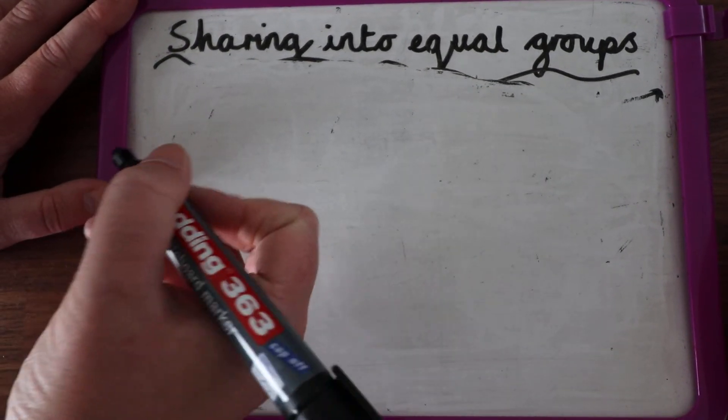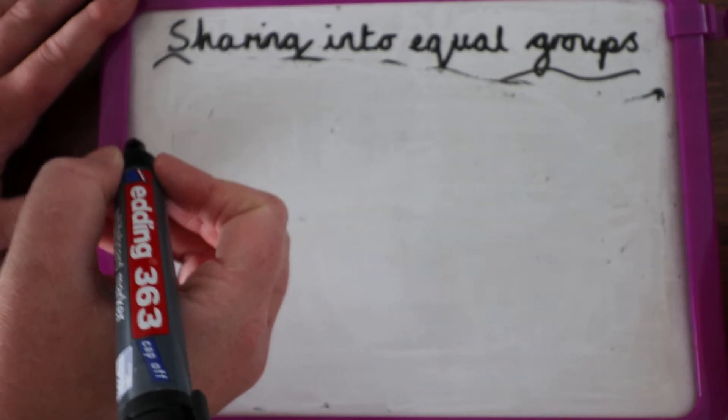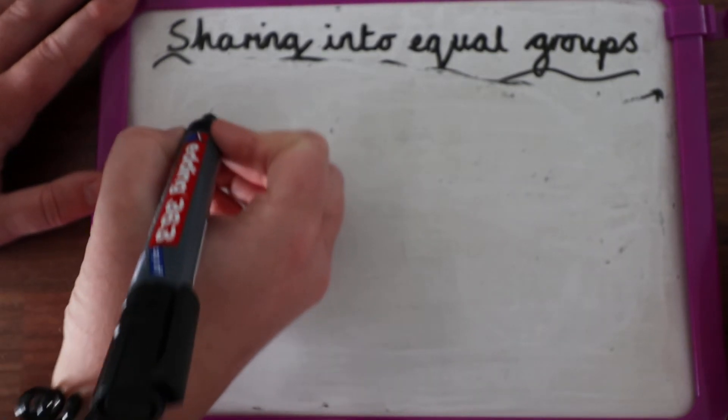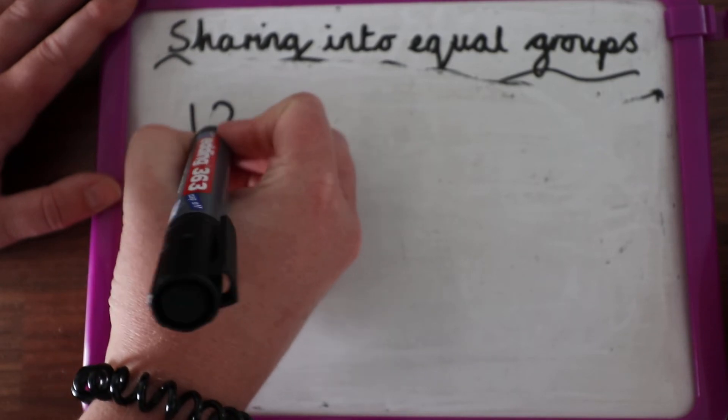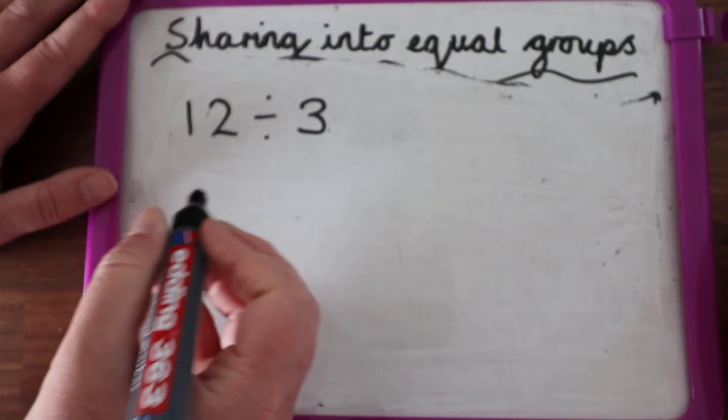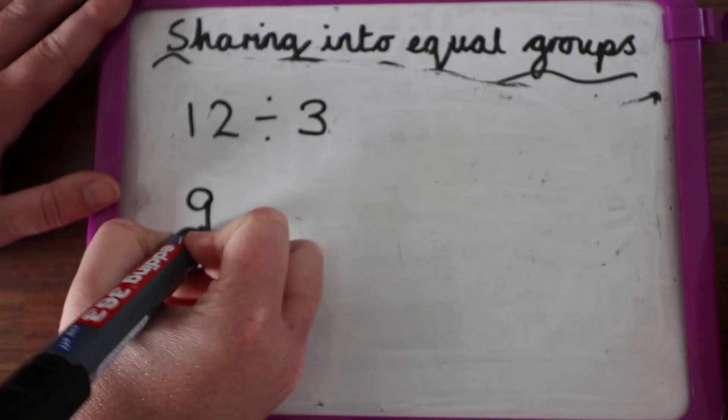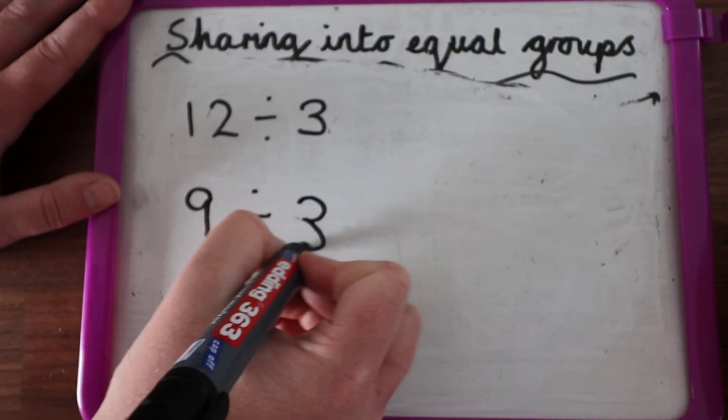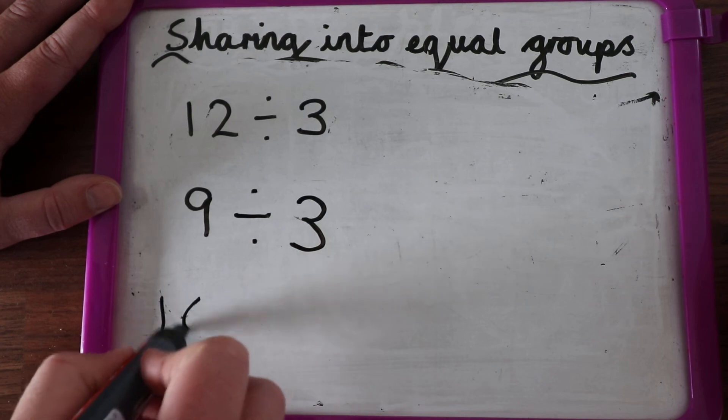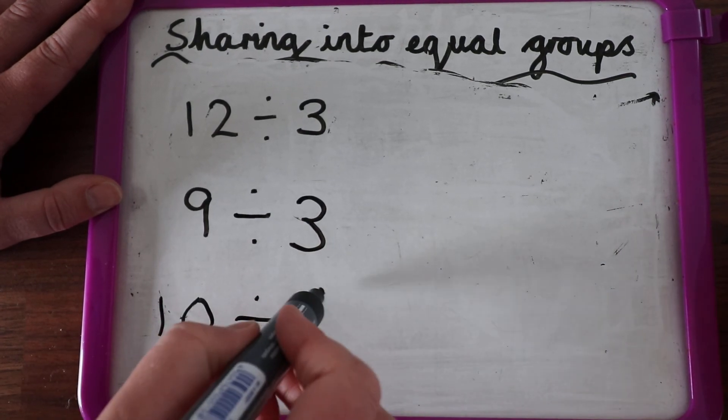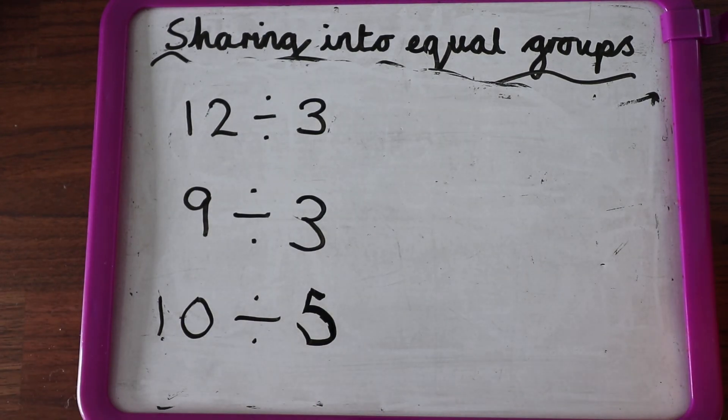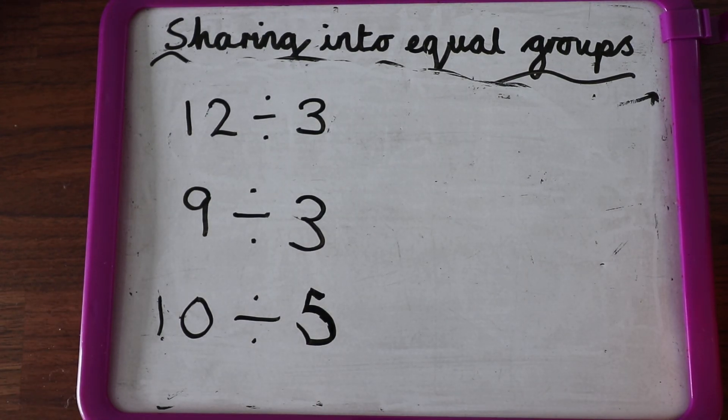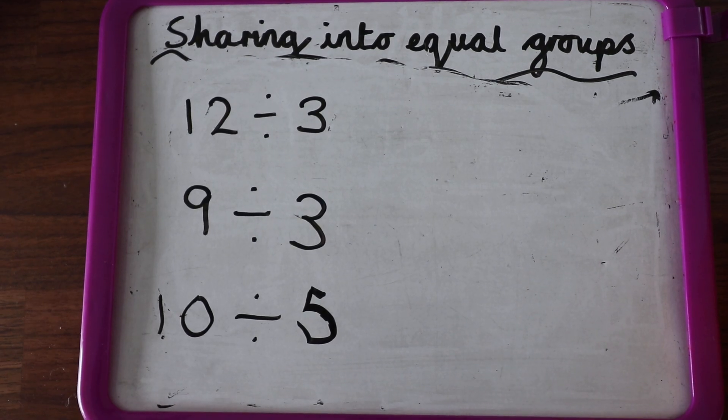I'm going to give you... Oh, I forgot to do the answer. I've missed it, didn't I? Let's do 12 shared into three groups. Let's do 9 shared into three groups, and 10 shared into five groups. Make your arrays and see how you get on. Have a great day, everybody.